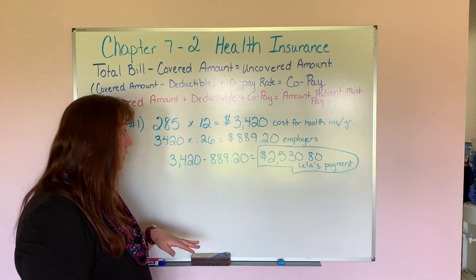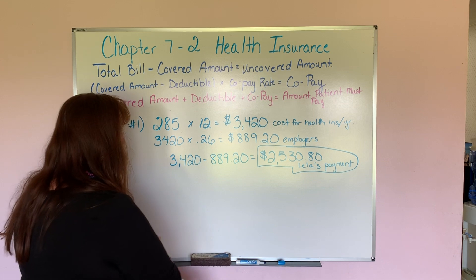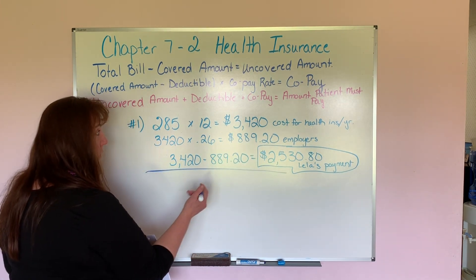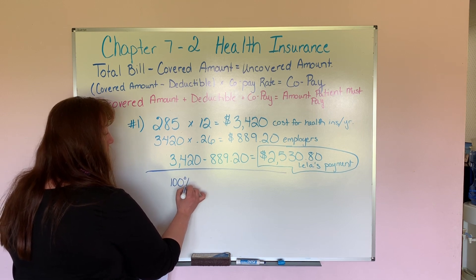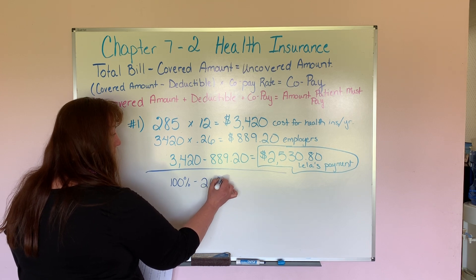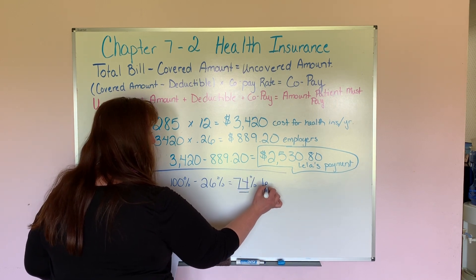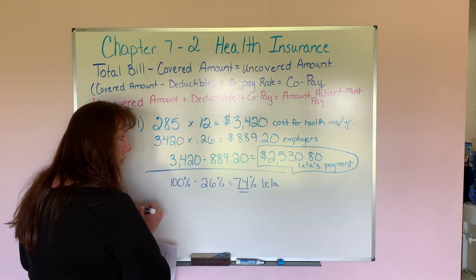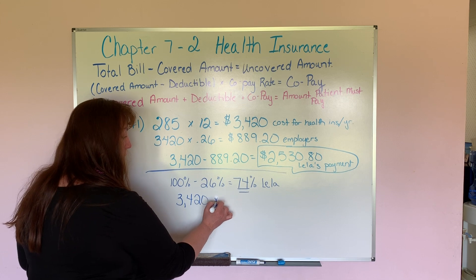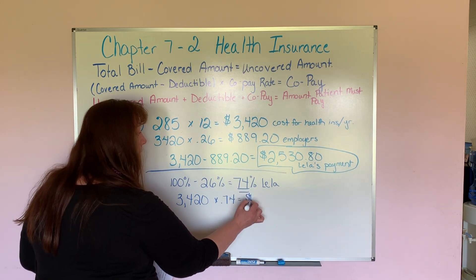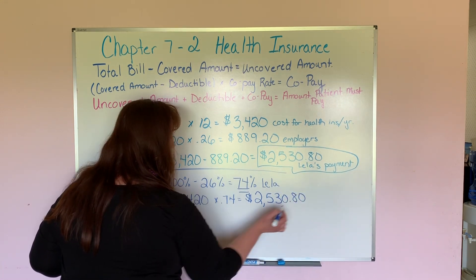Now you might ask: why not just figure out Leela's amount directly? You can do that. The other way is: 100% minus the employer's 26% gives us 74% — so Leela pays 74% of her health insurance. You can take the total annual cost of $3,420 times 0.74, and it will still give you $2,530.80. That way you don't have to do the subtraction step.